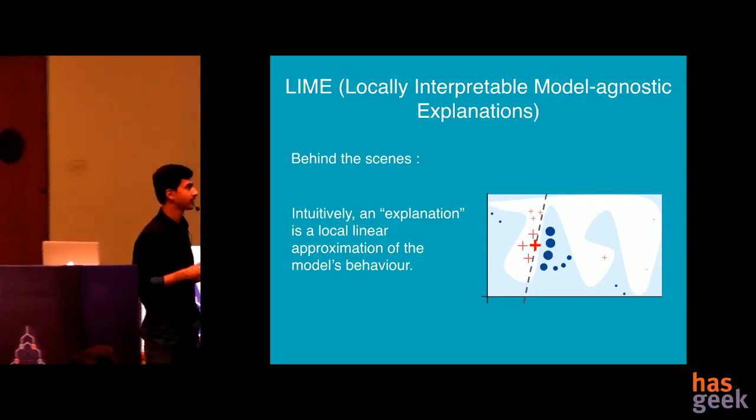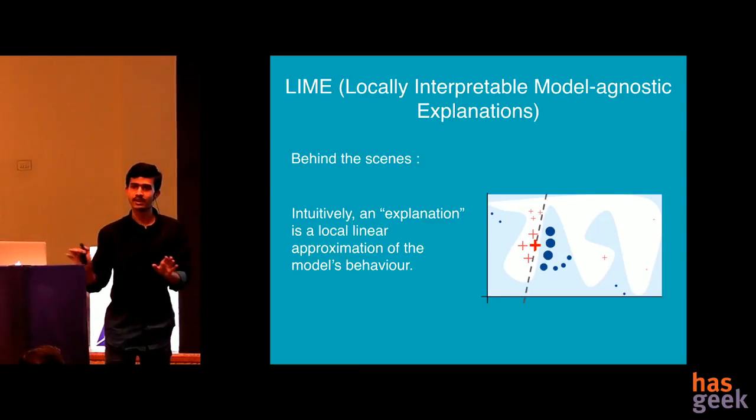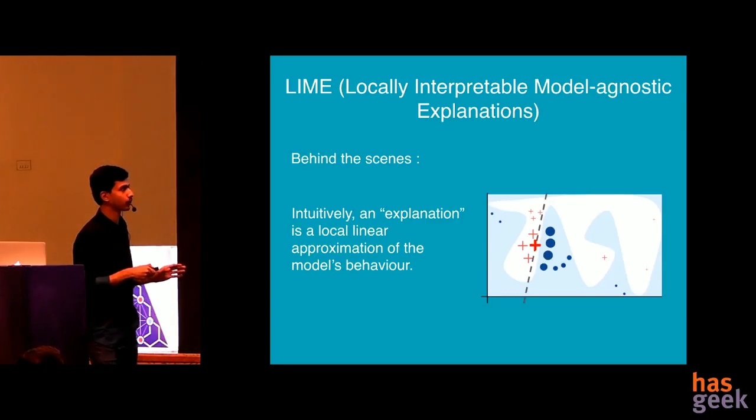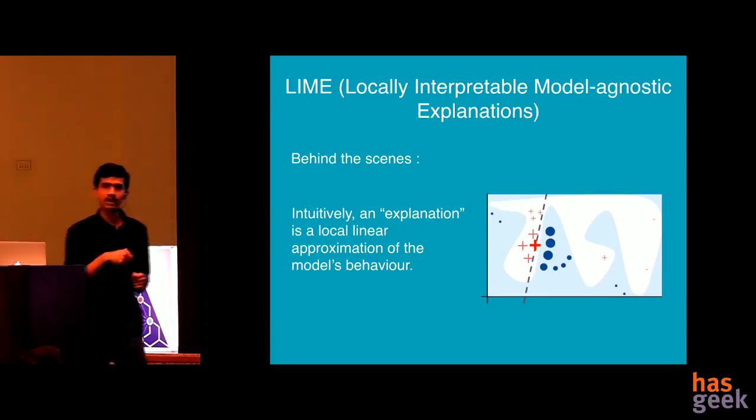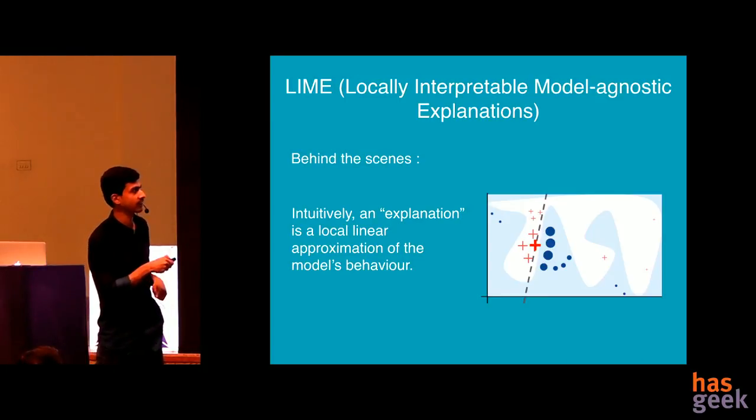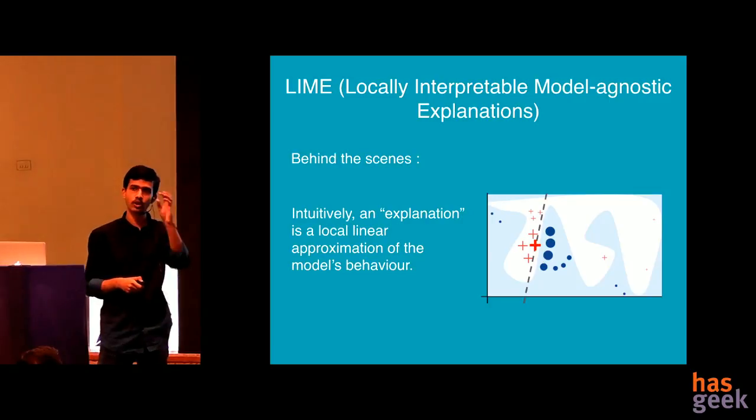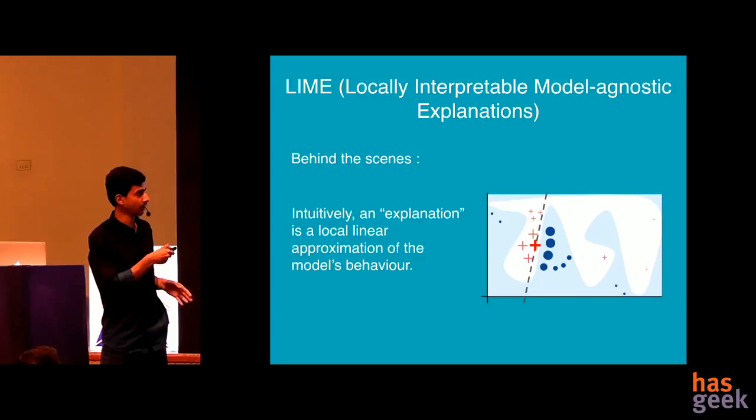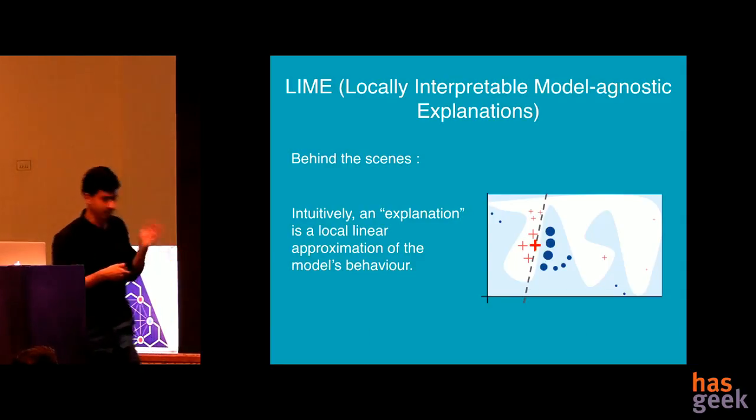So LIME is a very interesting method. Essentially what they do is they throw away the original model. Your original model is thrown away. And suppose you want to explain this particular instance, what is done is data points are sampled across in the vicinity of that instance and locally another classifier is trained there. So another linear model is trained there. So in that particular local region, you know a proper interpretable model of why something is happening. The original model is thrown away and you train a new model around the vicinity and in the local context, you train an interpretable model, a linear model with which you can know what is happening inside this particular original model as well.